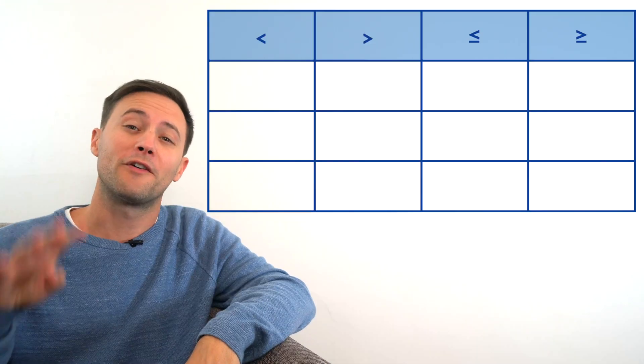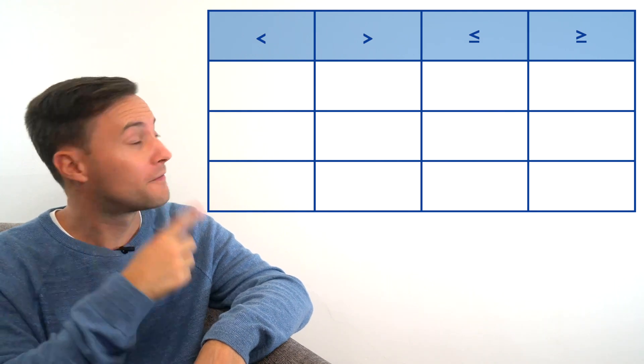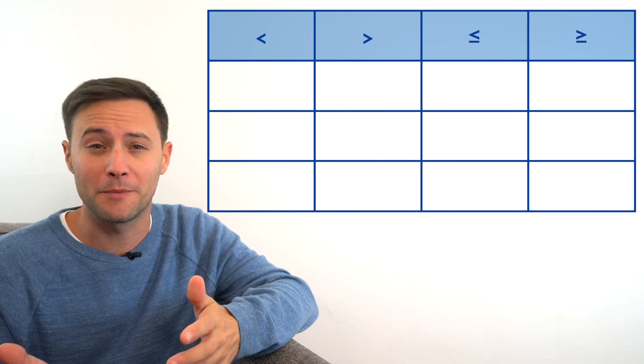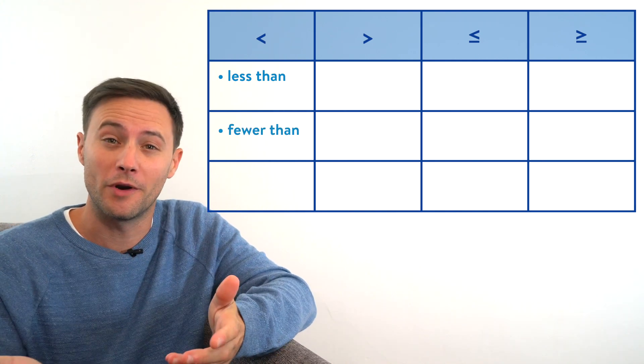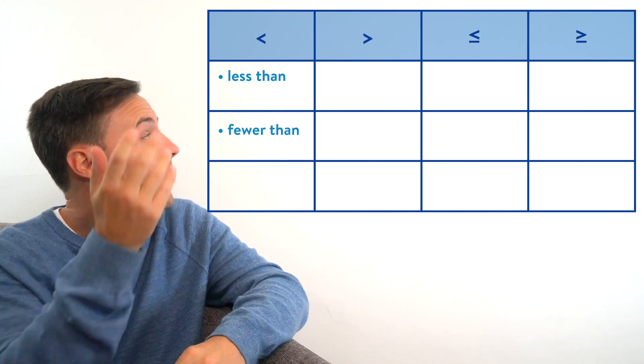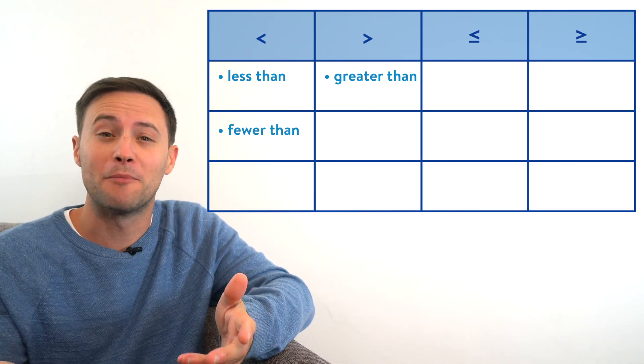So naturally we're not going to use an equal sign for inequalities. Instead we're going to use inequality symbols. There are four inequality symbols you need to know. The first two you should already be pretty familiar with: less than, or fewer than, and greater than, or more than.